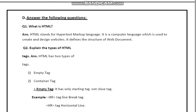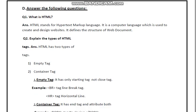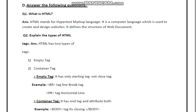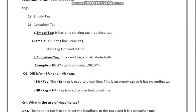Explain the types of HTML tags. HTML has two types of tags: empty tags and container tags. Empty tags have only a starting tag and no closing tag.